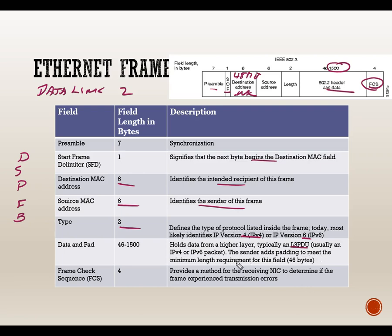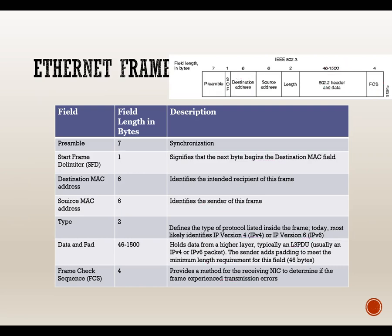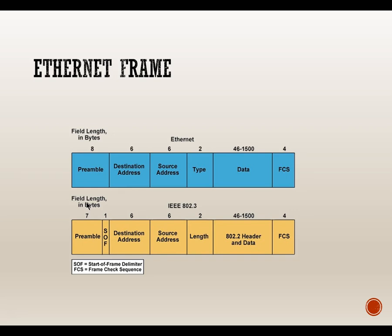The OSI layer mnemonic: Physical bits, Data Link frames, Network packets, Transport segments, and so on. There is a minimum of 46 bytes of data; going below that results in a runt frame. The Frame Check Sequence allows the receiving NIC to determine if the frame experienced transmission errors — whether it got corrupted in route. Looking at both frame types: true Ethernet uses a 'length' field while another variant uses a 'type' field.